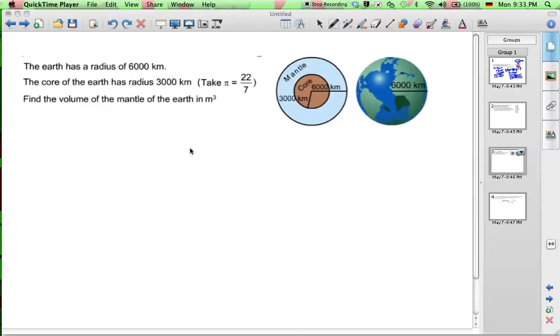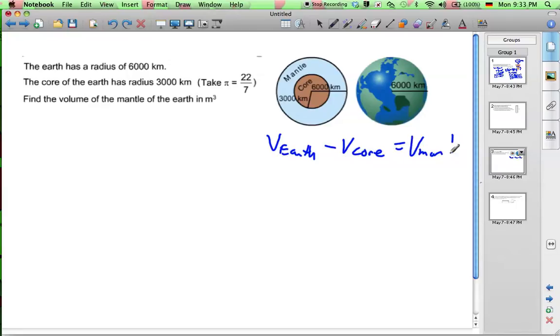So before we start finding volumes, let's make a simple equation. In order to get the volume of the mantle, we need to take the volume of the earth and subtract the volume of the core and that gives us the volume of the mantle. So if we can get the volume of the earth and the volume of the core, we can find the volume of the mantle and that's just what we're going to do here.